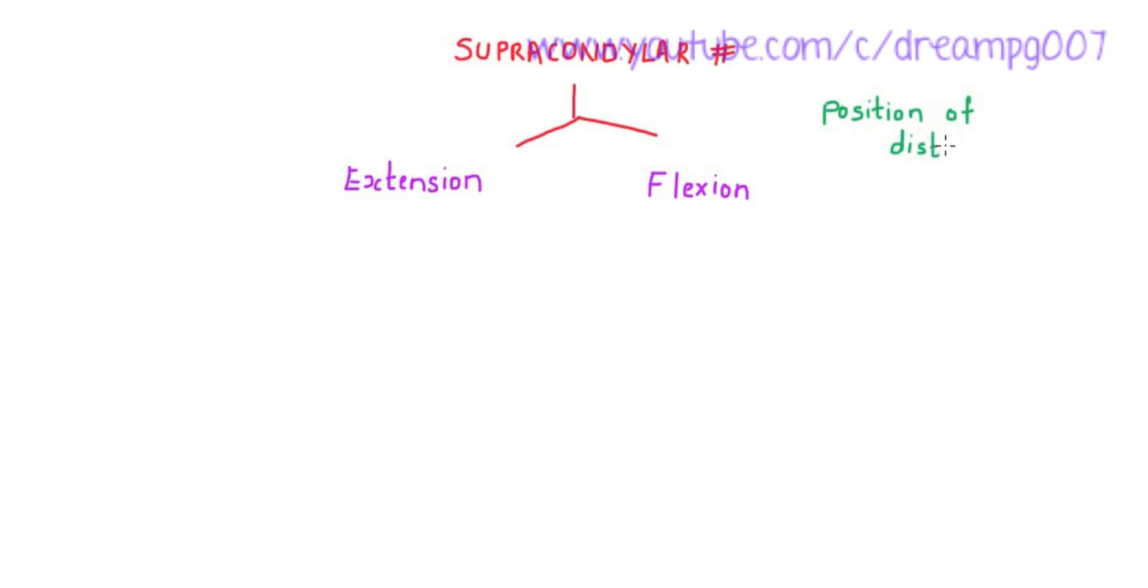The classification is based on the position of the distal fragment. Of these two, the most common type is the extension type, which is about 95 percent. The mechanism of injury is a fall on outstretched hand, where the distal fragment is dislocated posteriorly.